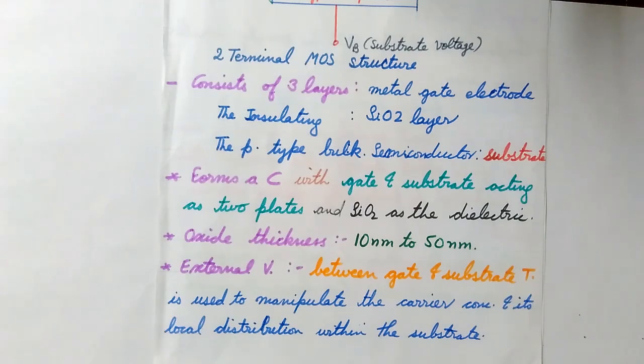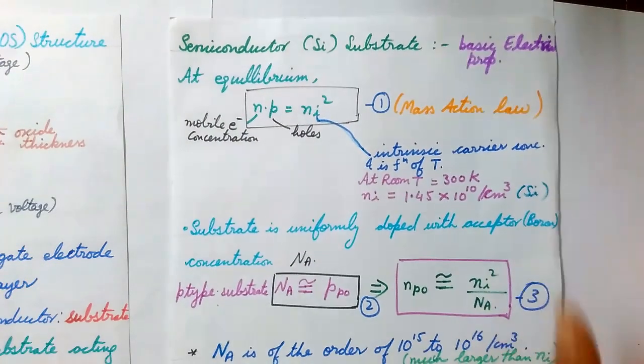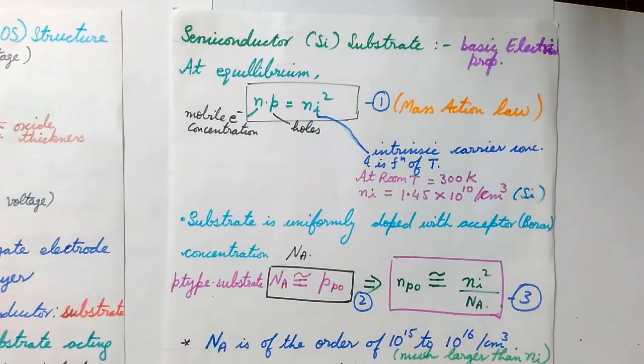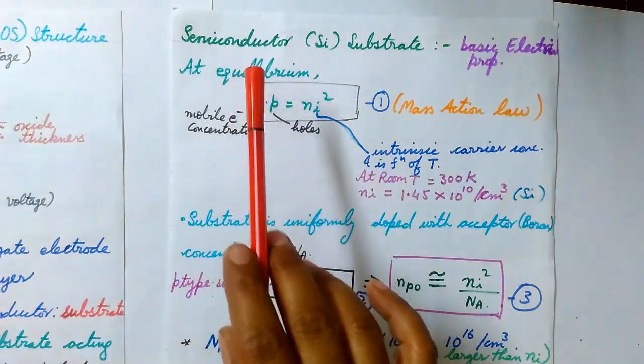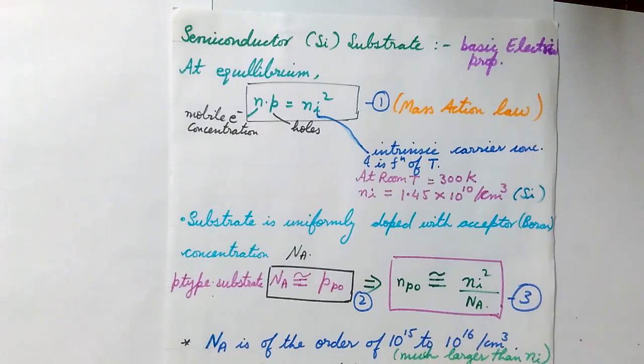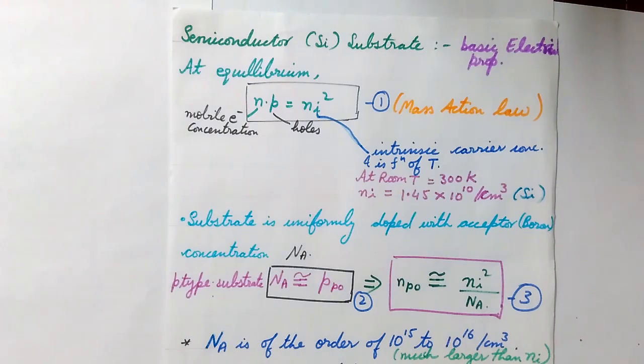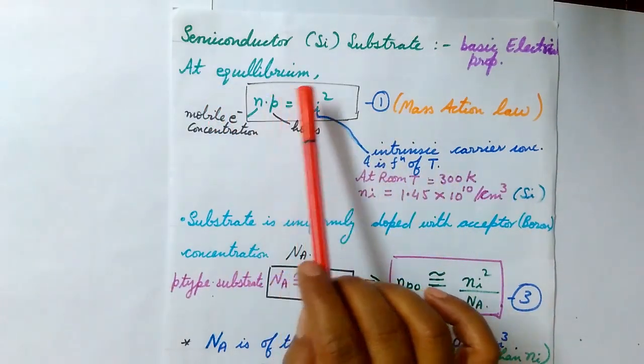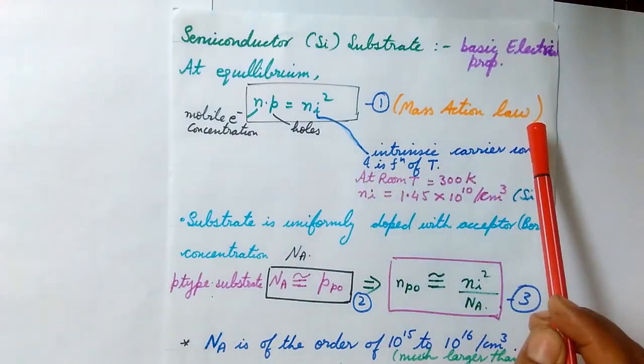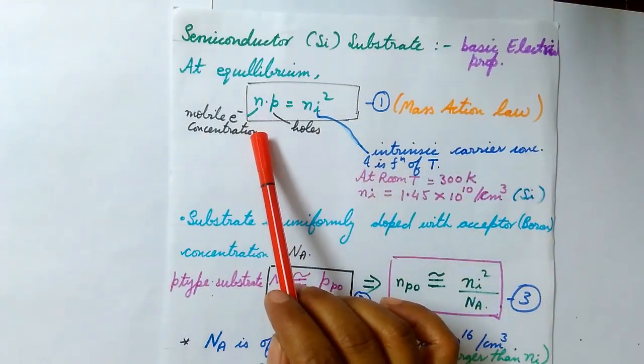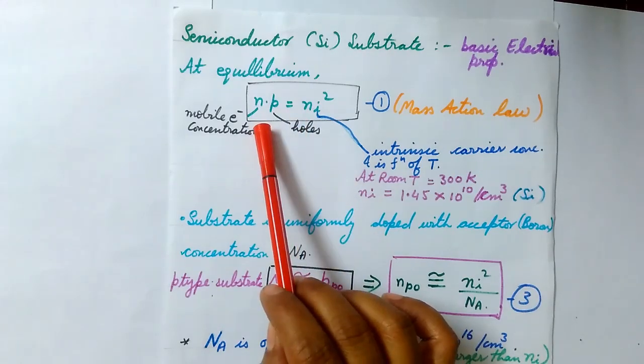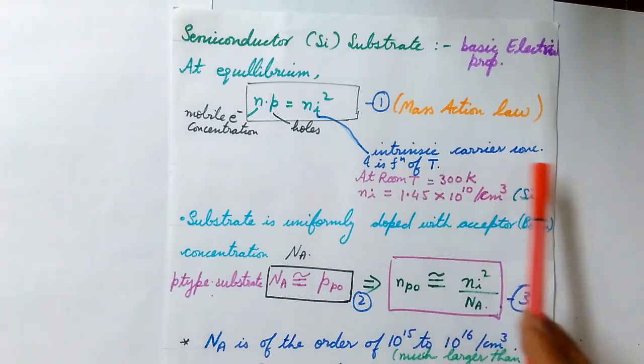The voltage which will apply at the gate will actually control the carrier's concentration, which will affect the current flow. Now we are going to discuss some aspects which are important for electrical conductivity. At the bottom we just saw there is the p-type substrate, and its basic electrical properties are important. We know that at equilibrium, as per mass action law, the product of the mobile electron concentration and the holes is equal to the square of the intrinsic carrier concentration.